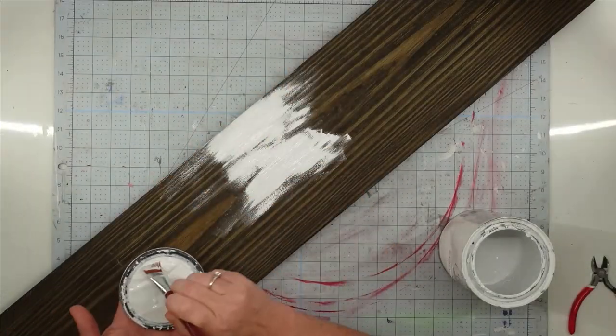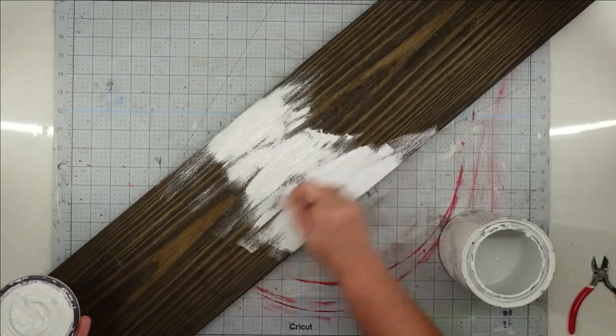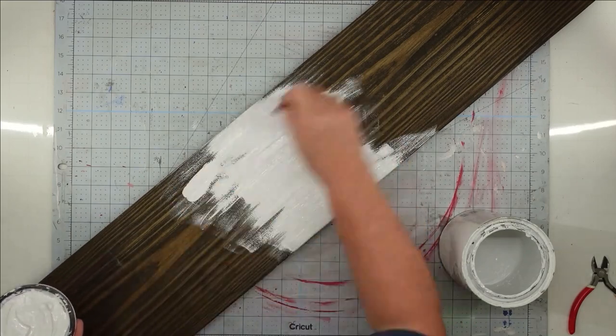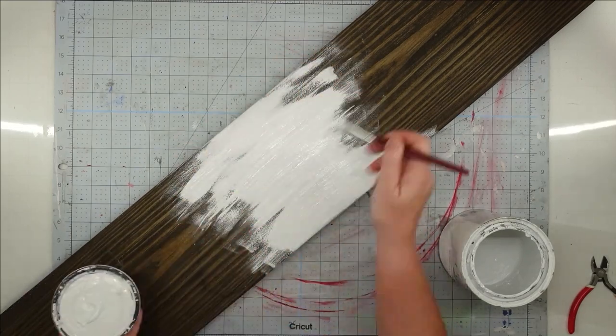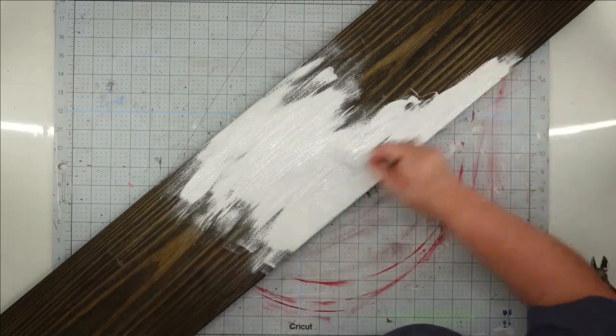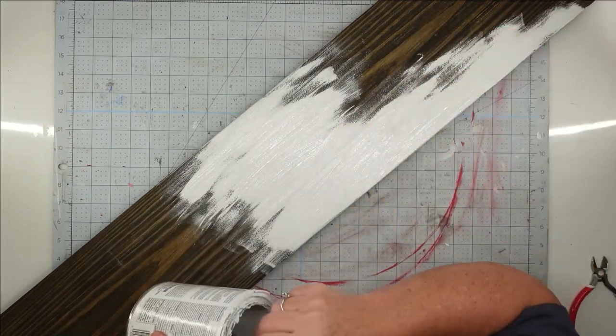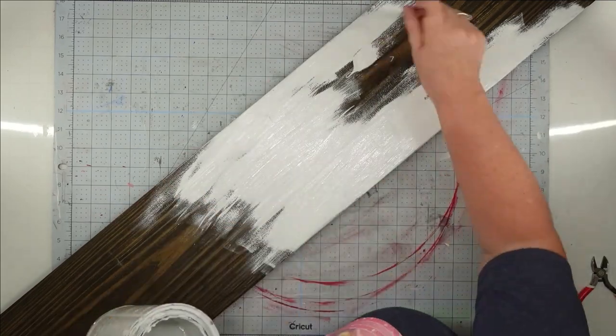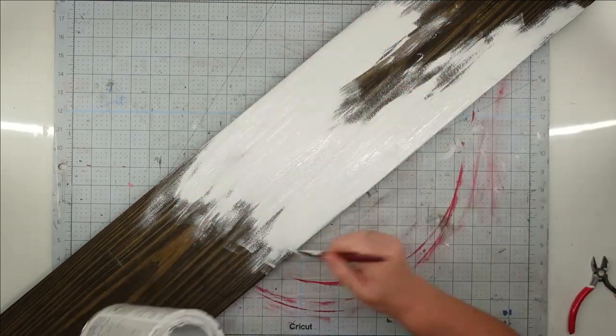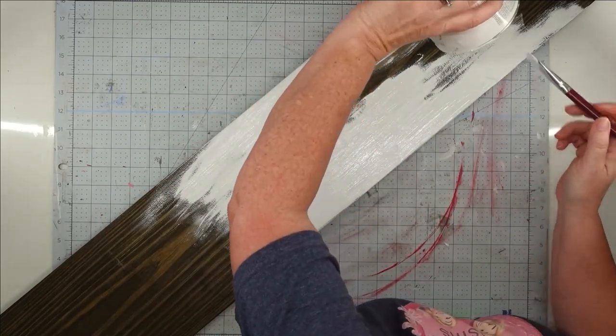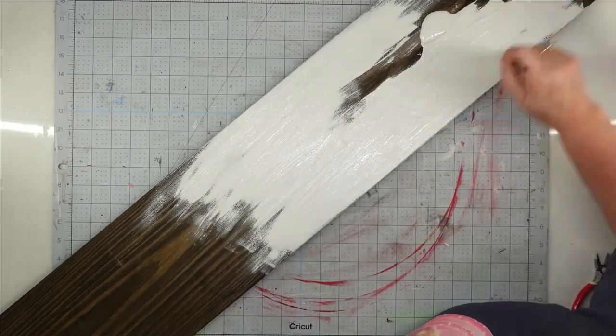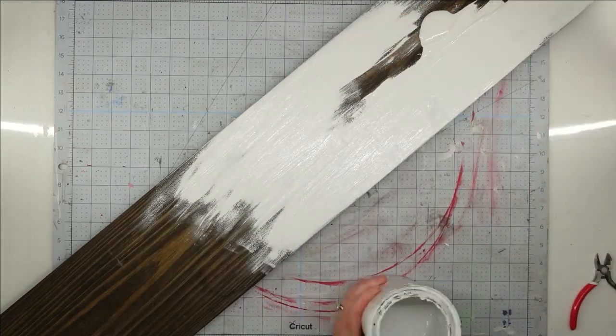So the first thing I'm going to do is give my board a good coat of my Rust-Oleum chalk paint. Now I do prefer the Waverly chalk paint but I was out of it and I didn't want to have to go to town. I had this on hand and it was a little thick but it still worked out just fine. I'm going to paint the front, the back, and all the sides of my board and set it aside to dry.